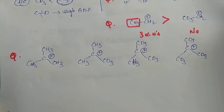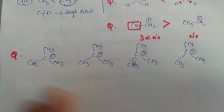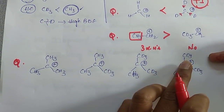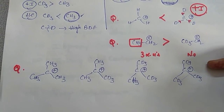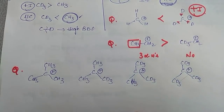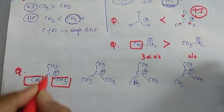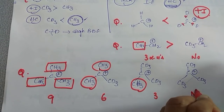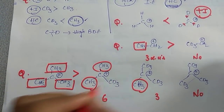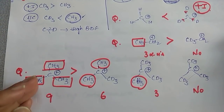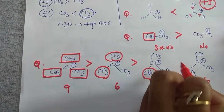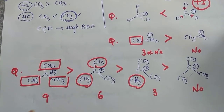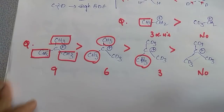Next question with four structures: give the stability order. Even though CD₃ has more +I effect than CH₃, you should not use inductive effect here because hyperconjugation is the dominating factor. Count the alpha hydrogens: structure 1 has 9, structure 2 has 6, structure 3 has 3, structure 4 has 0 alpha hydrogens. So stability: 1 > 2 > 3 > 4. If they ask for the number of hyperconjugative structures due to alpha hydrogens for structure 1, the answer is 9; total structures = 9 + 1 = 10.